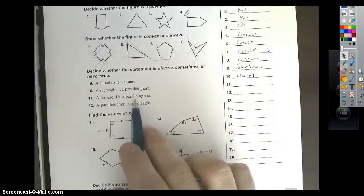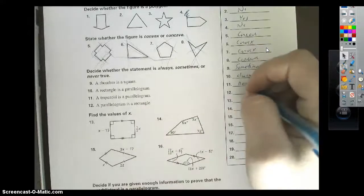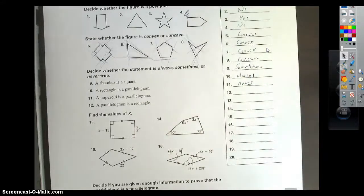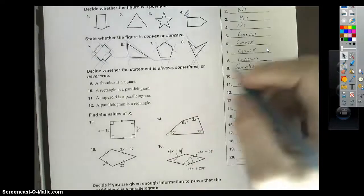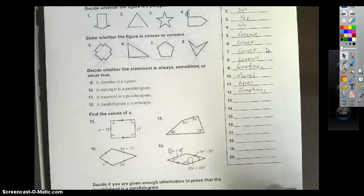A trapezoid is a parallelogram. These are two separate branches off a quadrilateral. This one will be never. A parallelogram needs both pairs of opposite sides parallel. Trapezoid only needs one. Finally, a parallelogram is a rectangle. This is another one that's sometimes. It can be, just not all the time.